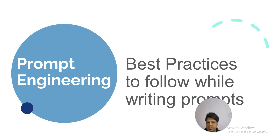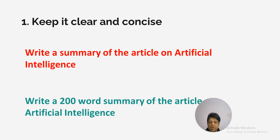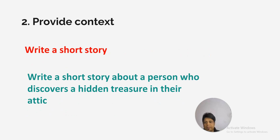Let's understand the best practices to follow while writing prompts. Number one: write clear and concise prompts. For example, if you write 'write a summary of the article on artificial intelligence', you're not specifying a word limit. But if you write 'write a 200-word summary of the article', then you are giving clear and concise instructions to ChatGPT.